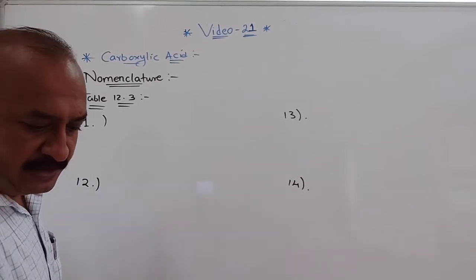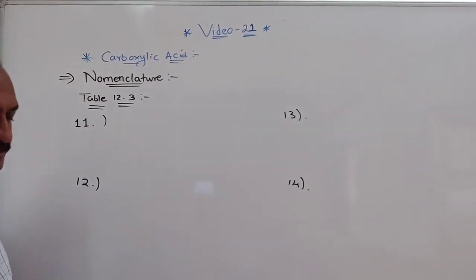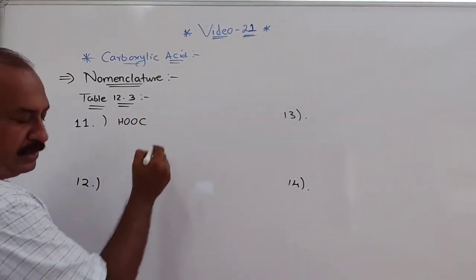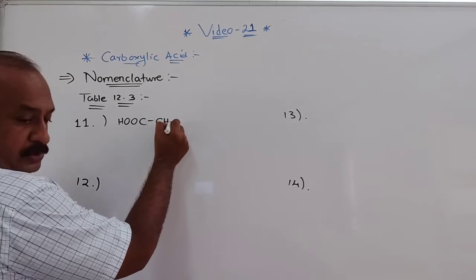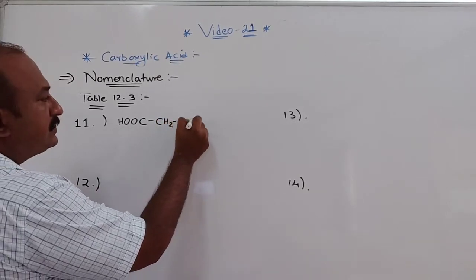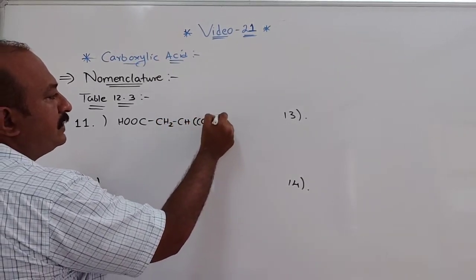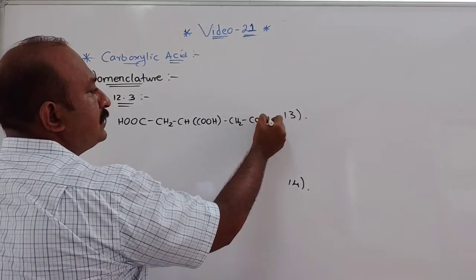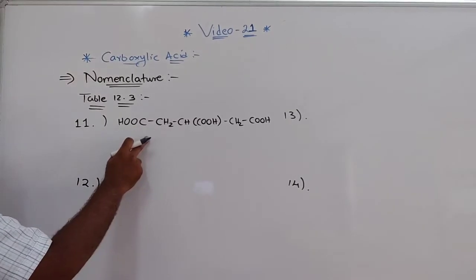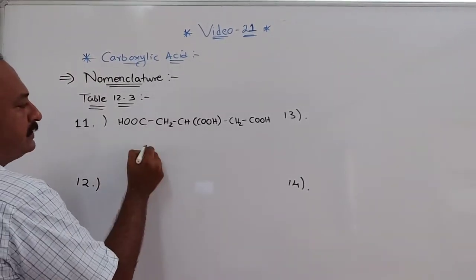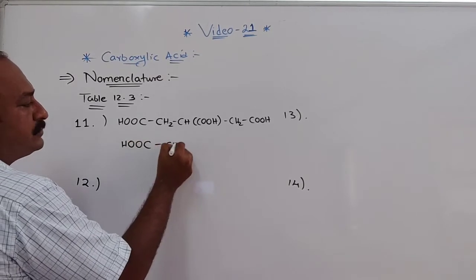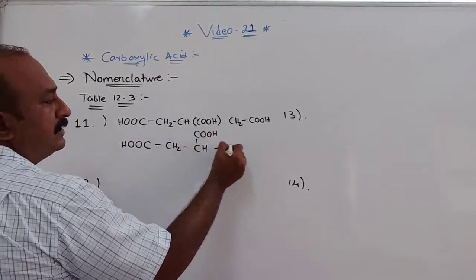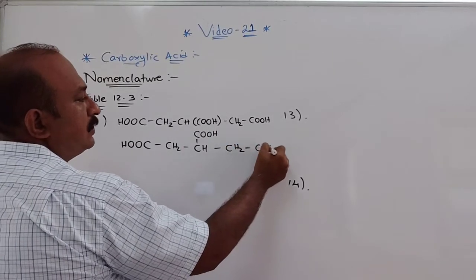The first one, the 11th example, is written like this: COOH, then CH2, CH, COOH in bracket, and then CH2 and COOH. This same thing can also be written in another form as COOH, CH2, CH with a branch on top.